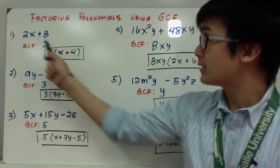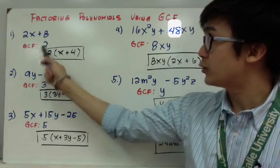So 2x plus 8, my greatest common factor for 2x plus 8 is 2. Now if I divide 2 and 2x, I'll get x here. And if I divide 2 and 8, I'll have 4.